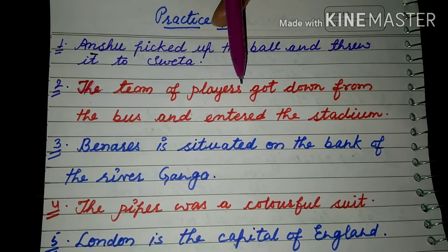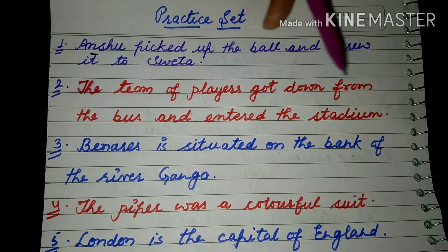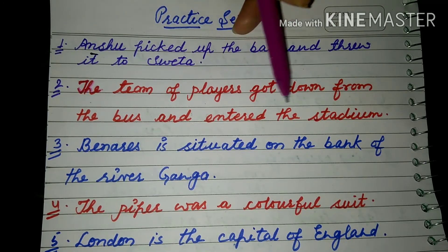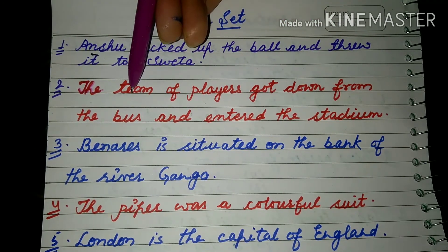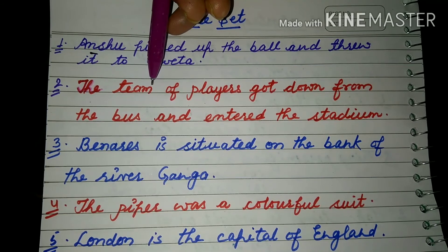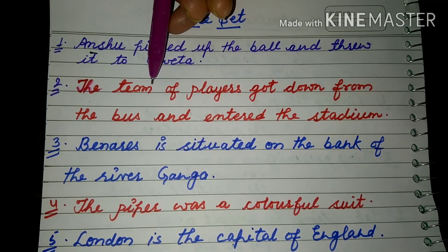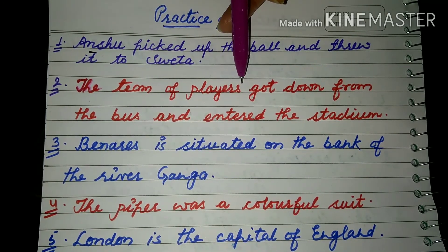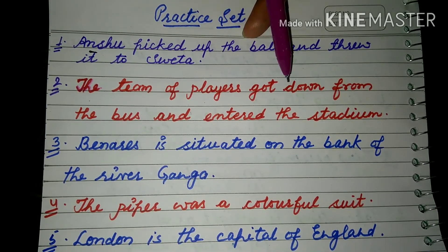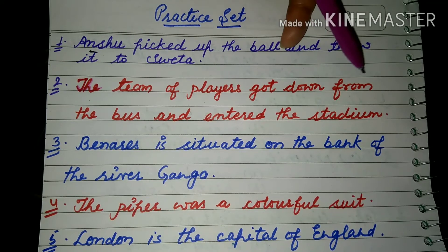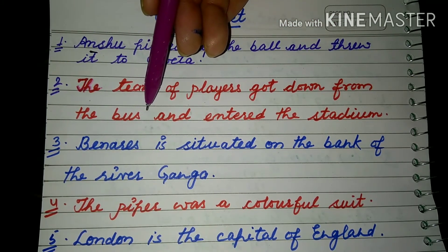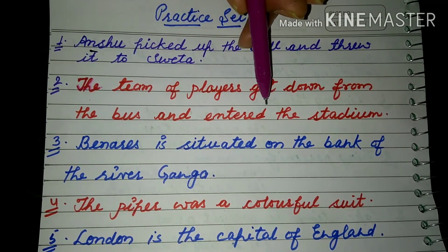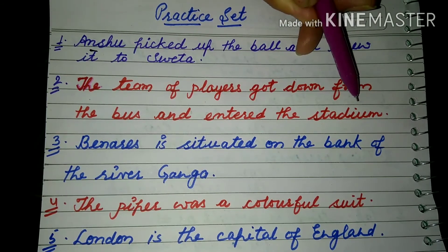'The team of players got down from the bus and entered the stadium.' Here, 'the team' is a collective noun — it denotes a group. Players is a common noun, got down is a verb, from is a preposition, bus is a common noun, entered is a verb, and stadium is a common noun.